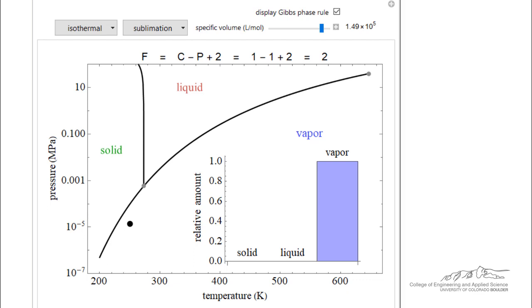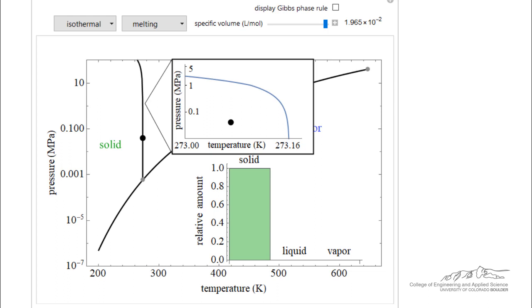Similar type behavior happens for liquid going to vapor from a temperature that's above the triple point. So let's look on the phase diagram for a melting process, and we're carrying this out isothermally. We're going to start with solid.